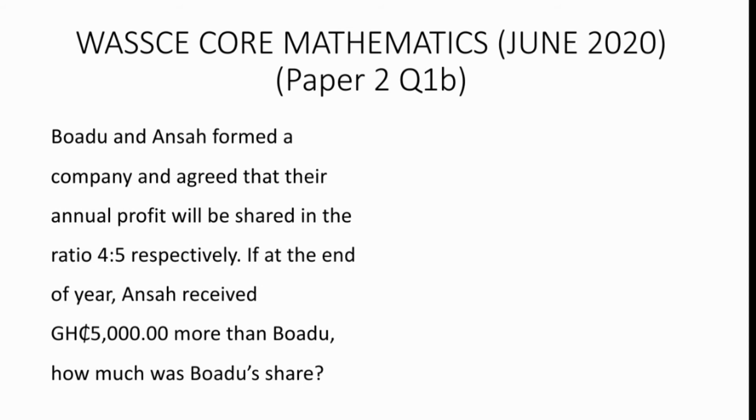We will let the annual profit equals x. Based on the ratio they used in sharing the annual profit, we can state that Bodo's share equals 4 over 9 multiplying x and Ansa's share equals 5 over 9 multiplying x.